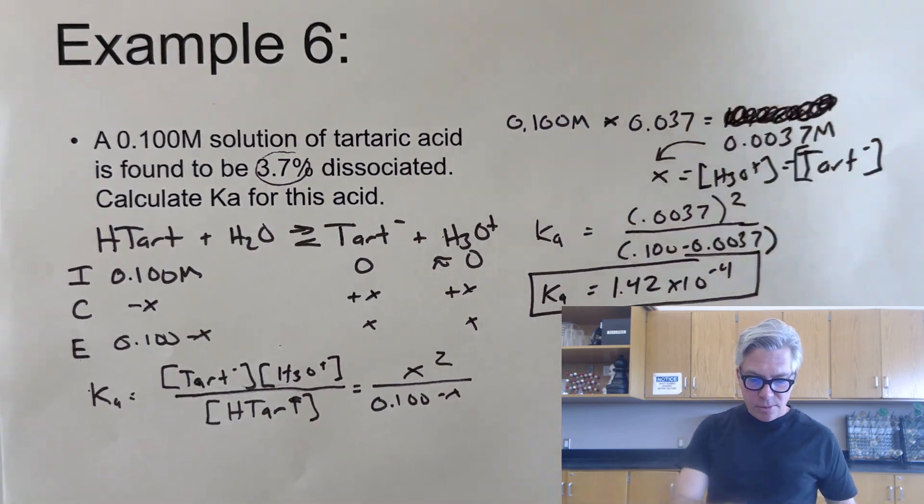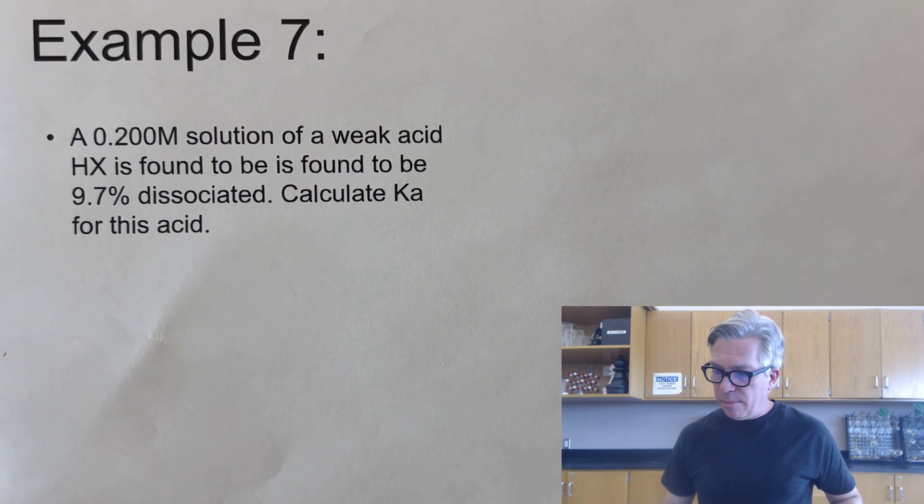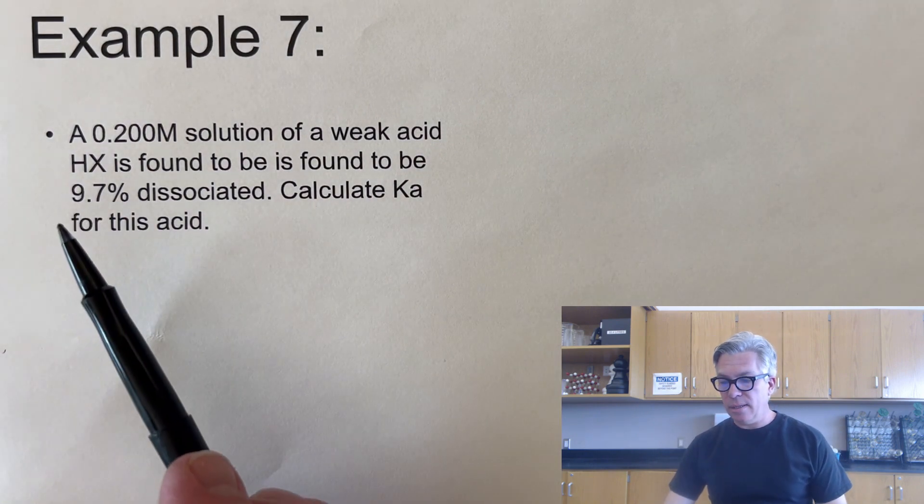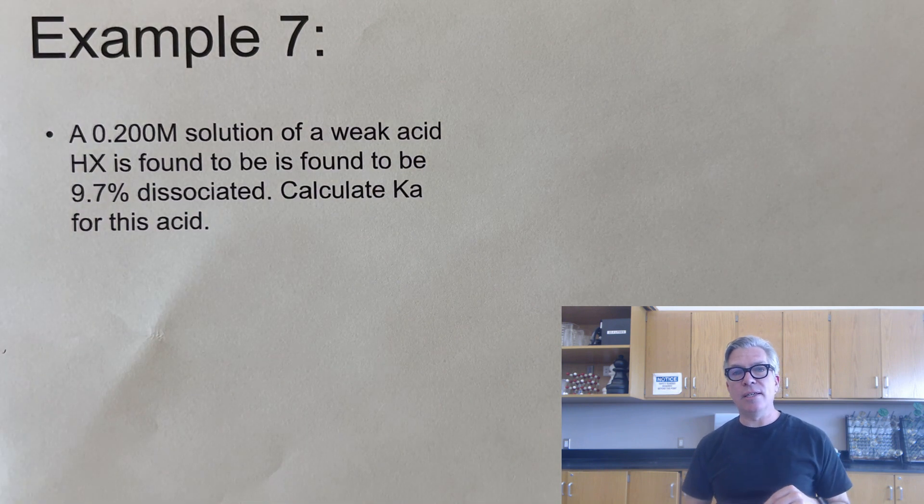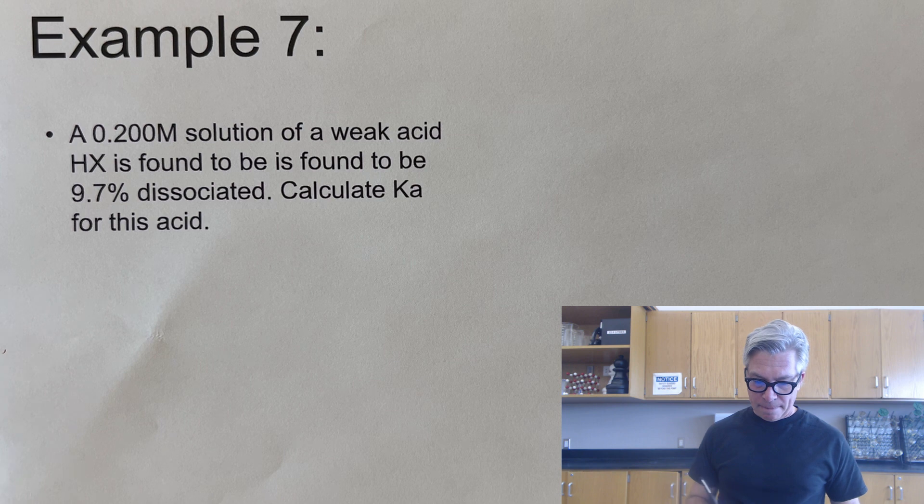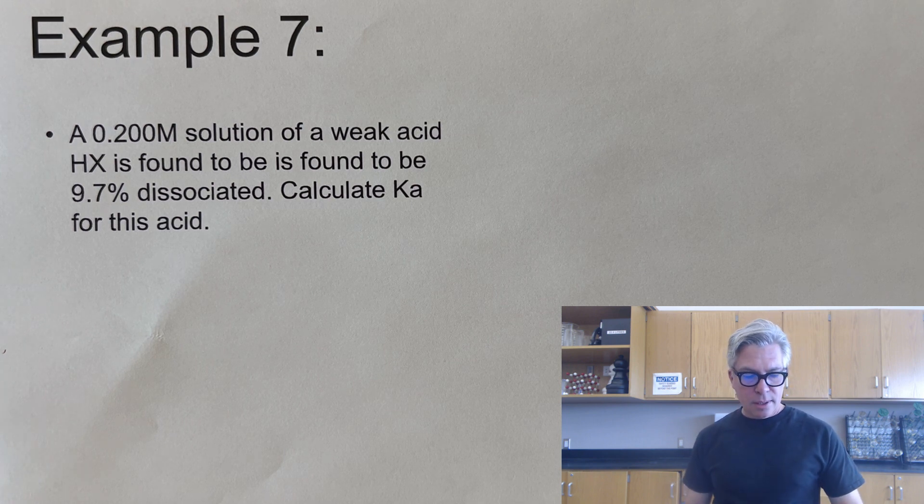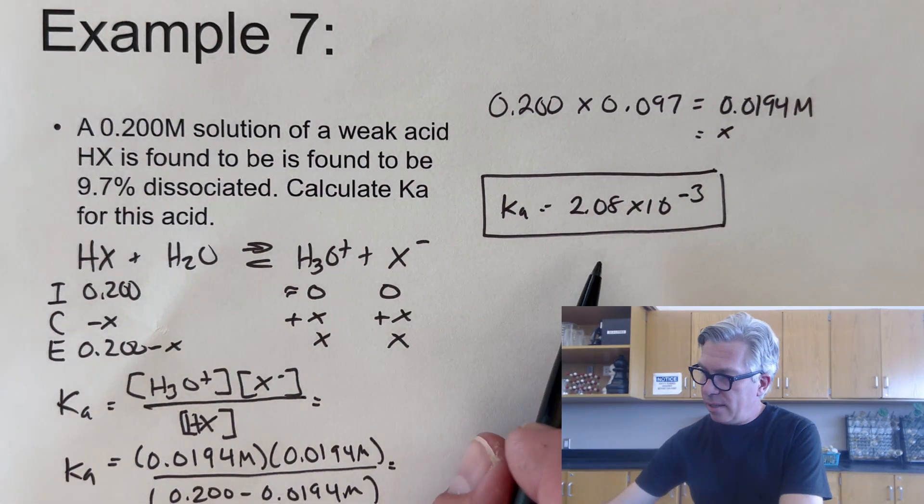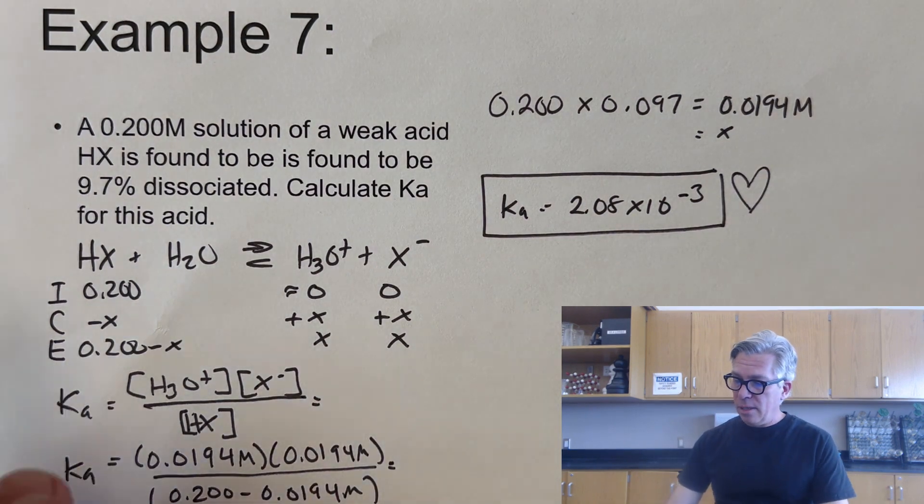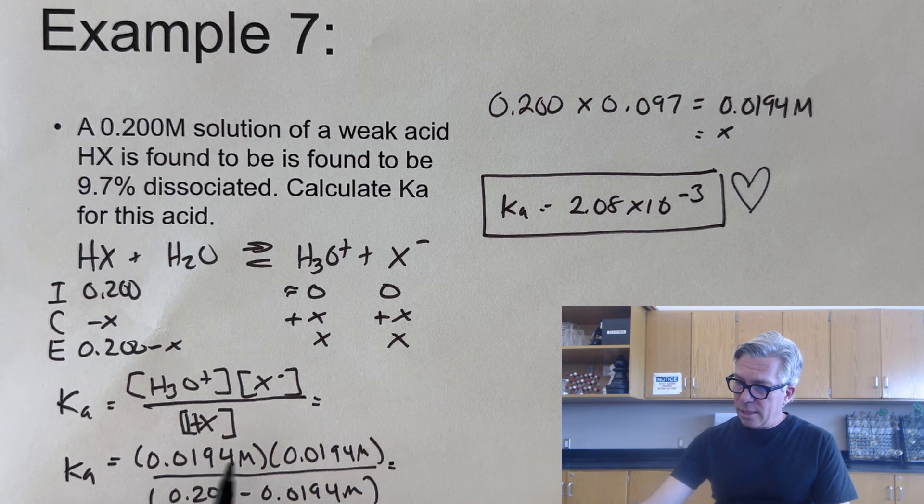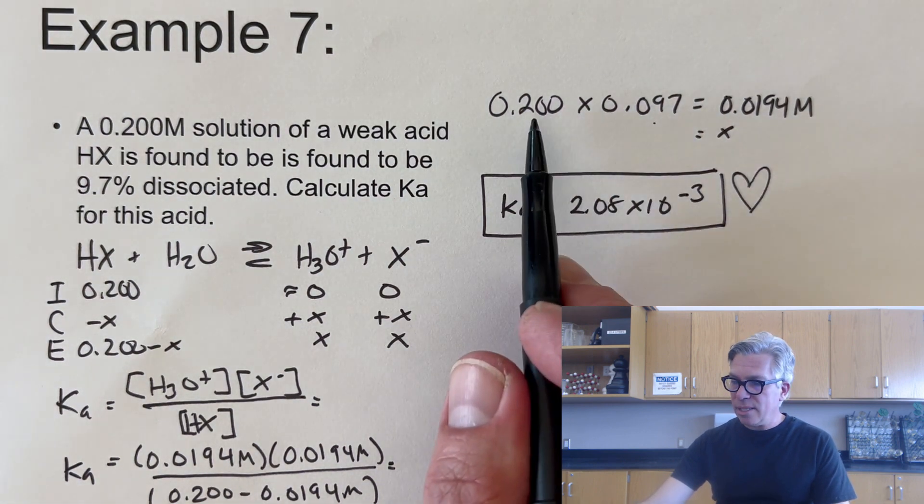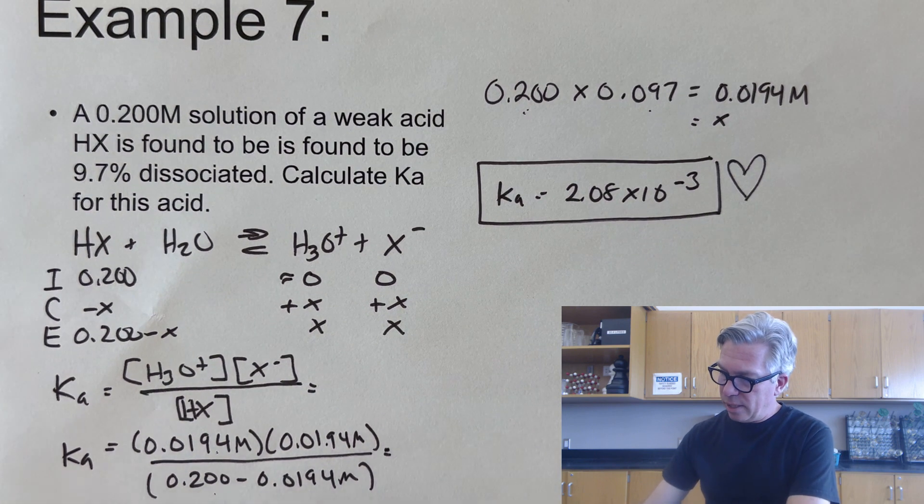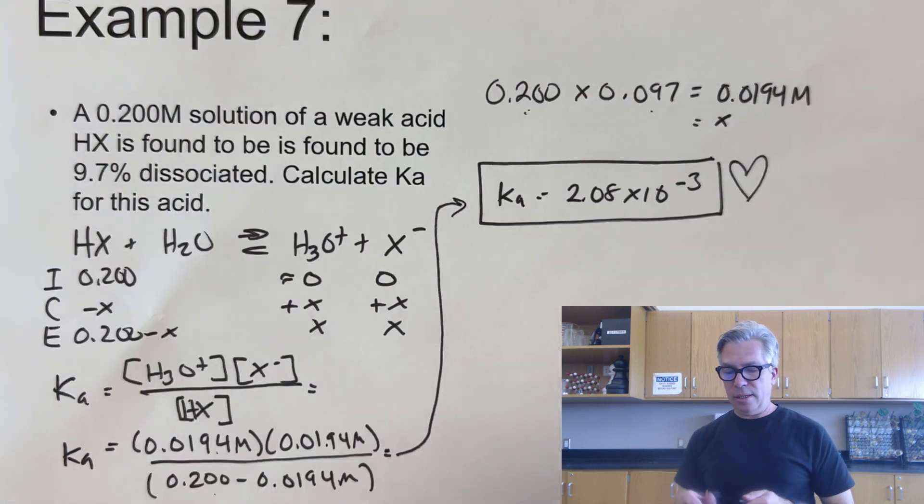Here's our last pause the video moment of the video. And a 0.2 molar solution of a weak acid HX, doesn't matter what it is, let's just go find it. And it's found to be 9.7% dissociated. Calculate Ka for this acid. Take a moment, pause the video, and I'll see you in a couple of seconds. And when I did this one I got a Ka value of 2.08 times 10 to the minus 3 using the same process as before: ice table, Ka expression, and stepping aside using the percent times the original amount to get the actual amount dissociated, plugging that in for both X's and the 0.2 minus X. And when I did the math I got a Ka value of 2.08 times 10 to the minus third.